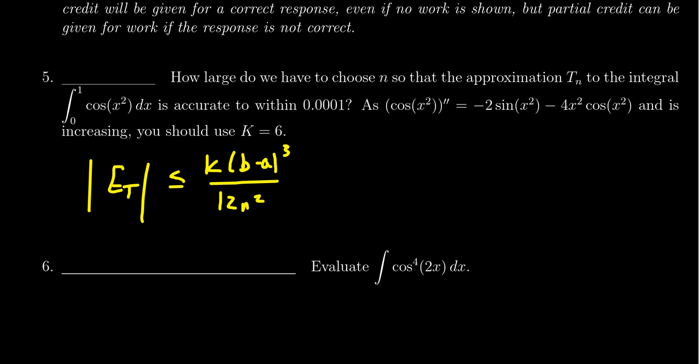The b and the a are the bounds of the integral. One minus zero to the third power, so that's actually going to be just one. We get 12n² on the bottom, and we have to look for that k. This is one of the hardest parts of the problem.